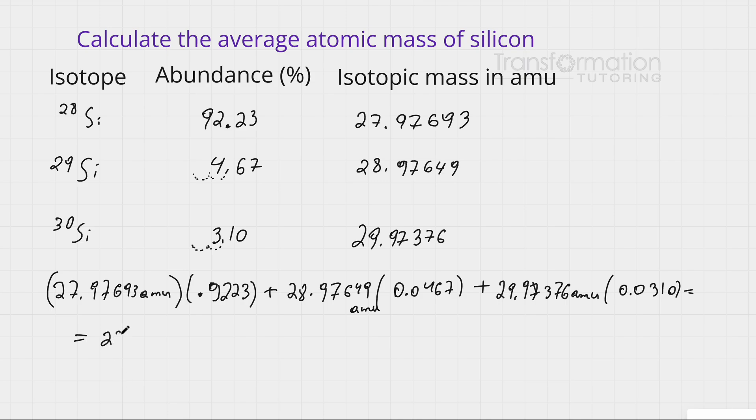You will get 28.0855 amu (atomic mass units). Notice that because this was the most abundant isotope, the atomic mass is closest to it. Let's now give our answer with the correct number of significant figures.